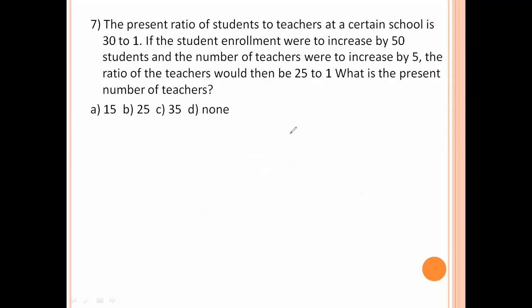The present ratio of students to teachers at a certain school is 30 to 1. If the student enrollment were to increase by 50 students and the number of teachers were to increase by 5, the ratio of the teachers would then be 25 to 1. What is the present number of teachers? 30 students, 30 K students. Plus 50 members added students equal to 25 students, 25 K. 30 minus 25, 5 K equal to 50. 5, 10 here. So K is the number of teachers. Now 5 teachers added. K plus 5, 10 plus 5 equal to 15. Now 15 number of teachers are there.